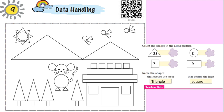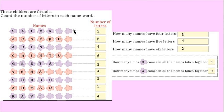The next exercise given is that these children are friends. Count the number of letters in each name. You have to write down the number of letters in each name, and after doing this, complete this exercise.